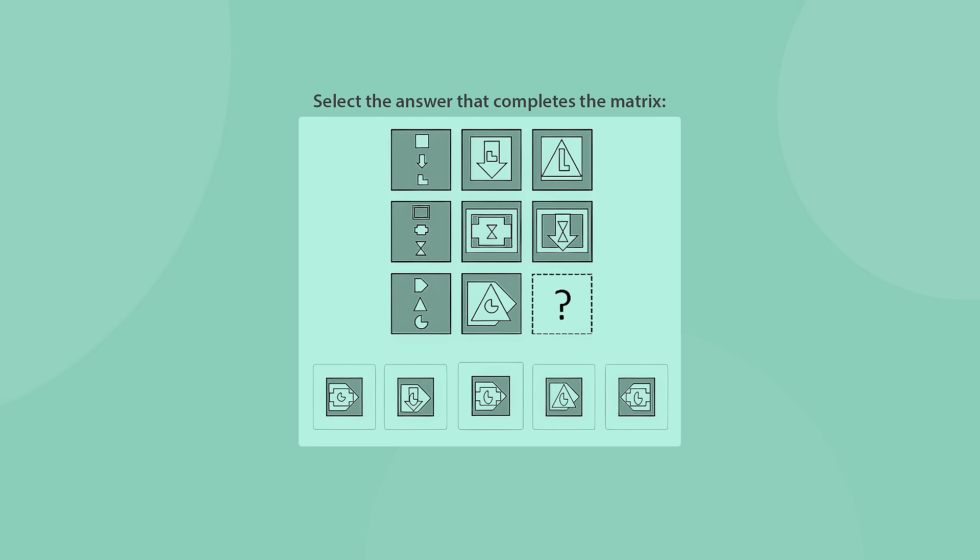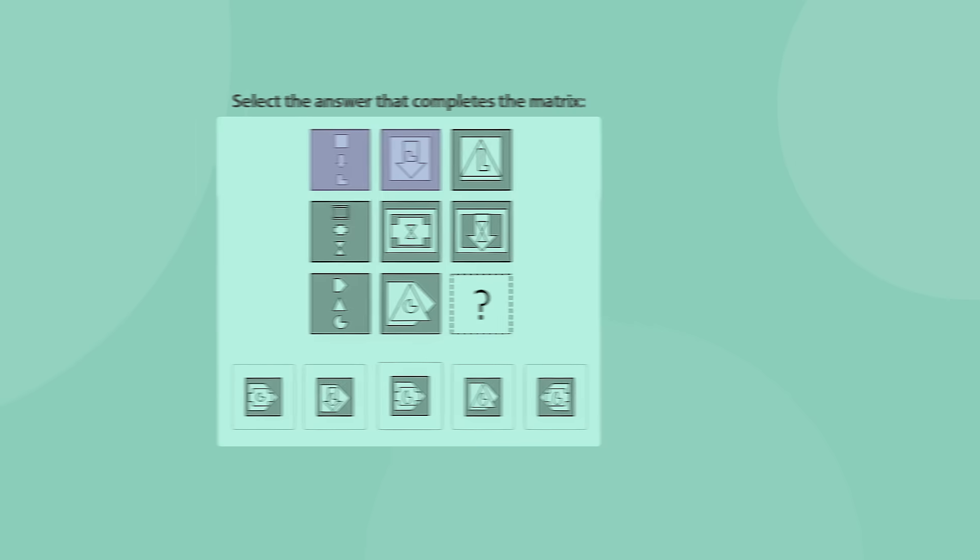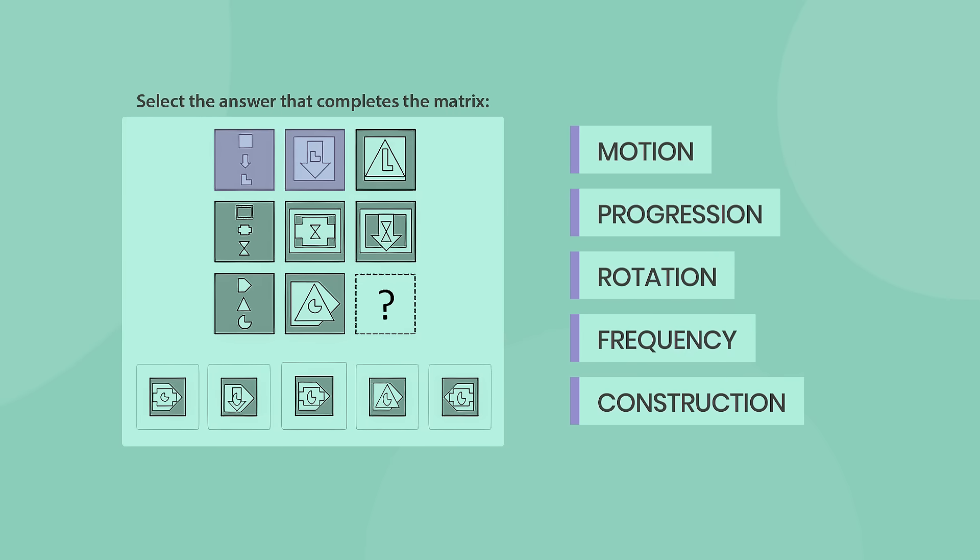Matrices questions on the C-cat come in the form of a 3x3 matrix, in which one shape is missing. Your task is to find the missing shape based on the rules given in the columns or rows. In this question, we can see that the first transition is made through the rows, as the shapes in the leftmost box also appear in a different formation in the middle box of each row. In the first row, for instance, the L shape is in the arrow, which is in the square. The first transition then follows the motion rule, which is one of the five most common C-cat matrix rules.